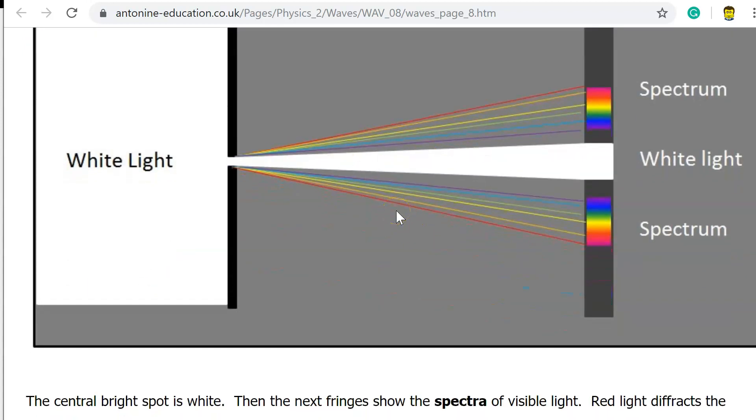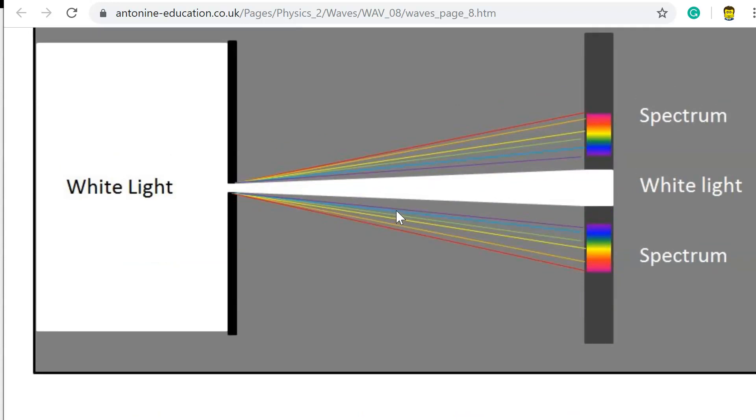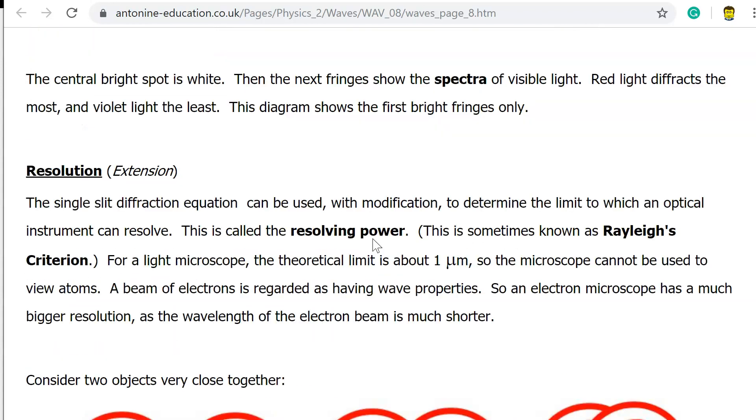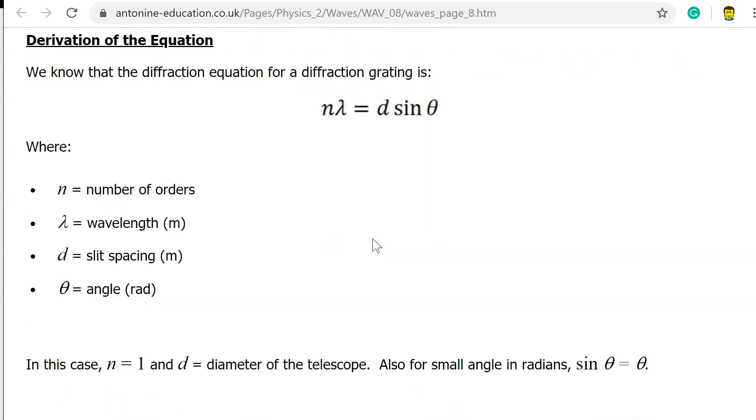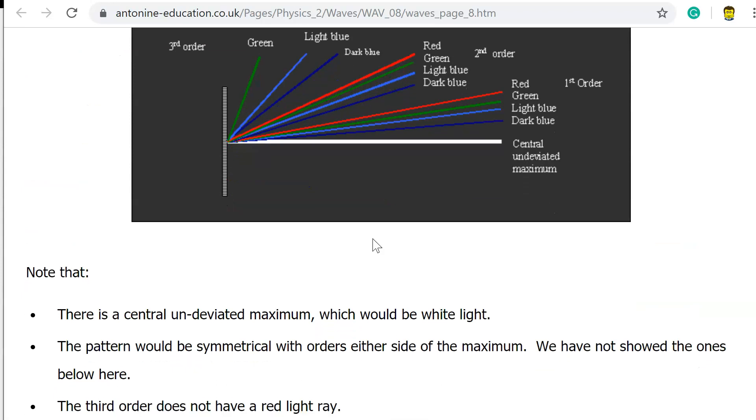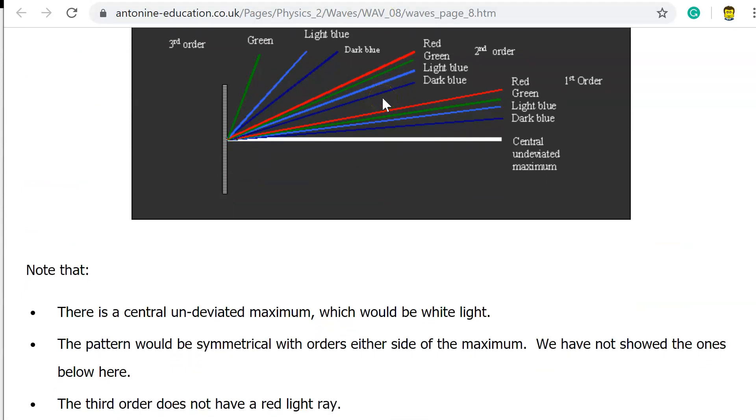This is effectively what we're going to try and do. We're going to use the fact that when you pass white light through a diffraction grating, you can actually measure the particular wavelength based on the order, the angle, and the fineness of the diffraction grating.